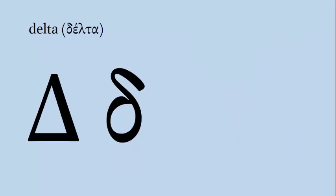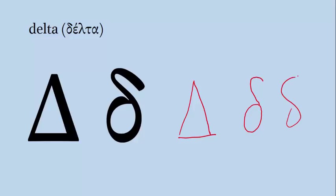Next we have the Greek letter Delta, which corresponds roughly to the letter D and makes a D sound as in 'dinner.' To draw an uppercase Delta, we just draw a big triangle. A lowercase Delta is a little bit trickier — I start at the middle of the line, make a circle, continue up around, and then put a little curl on top. An example of a Greek word with Delta is the verb 'dioko,' which means 'I hunt, I pursue.'